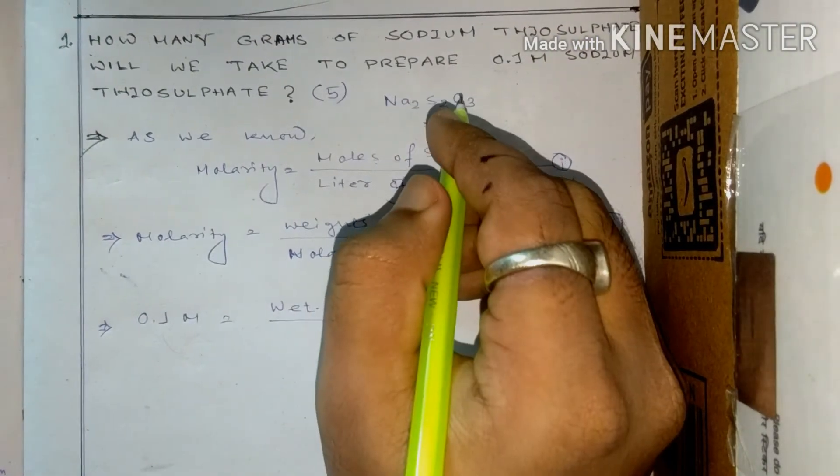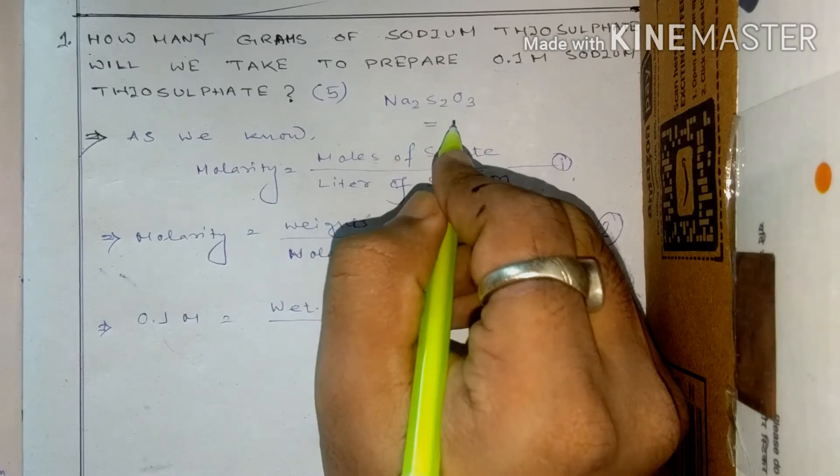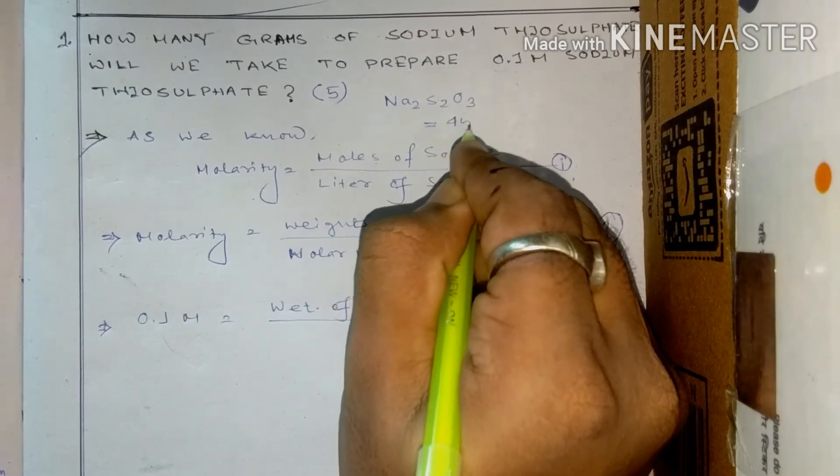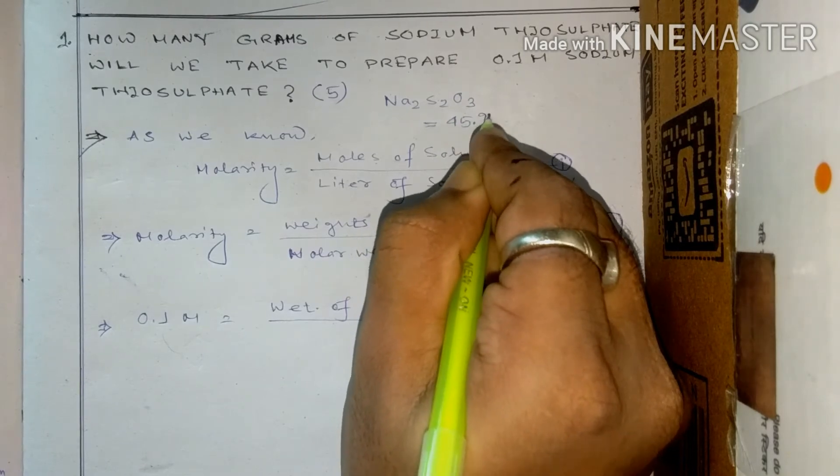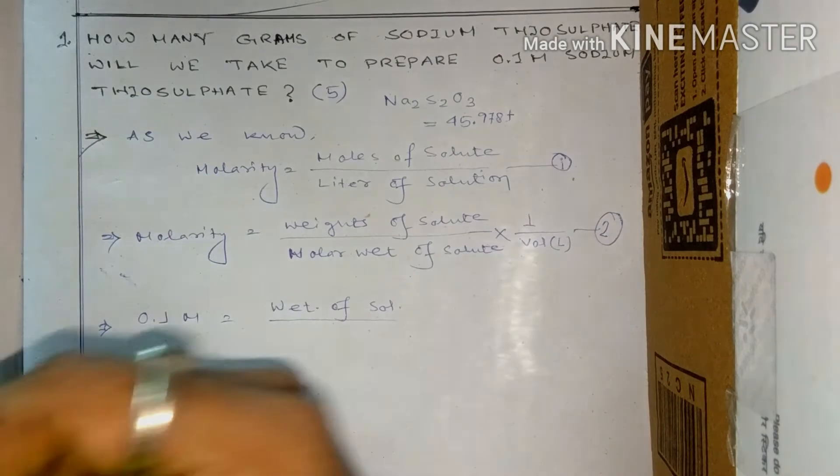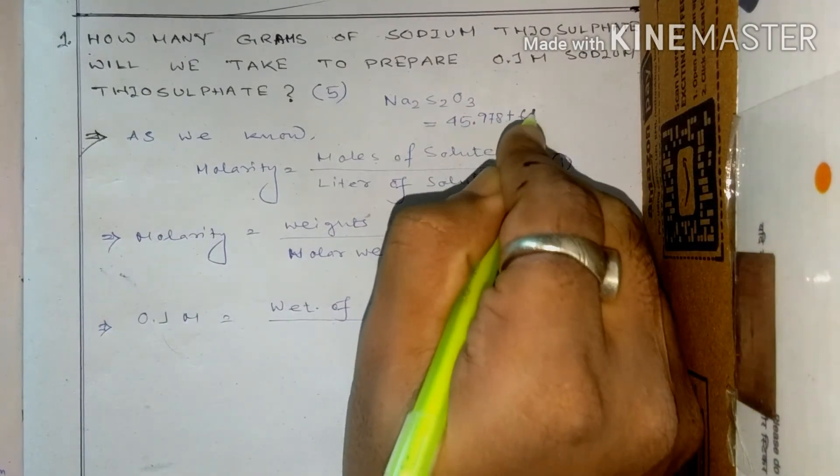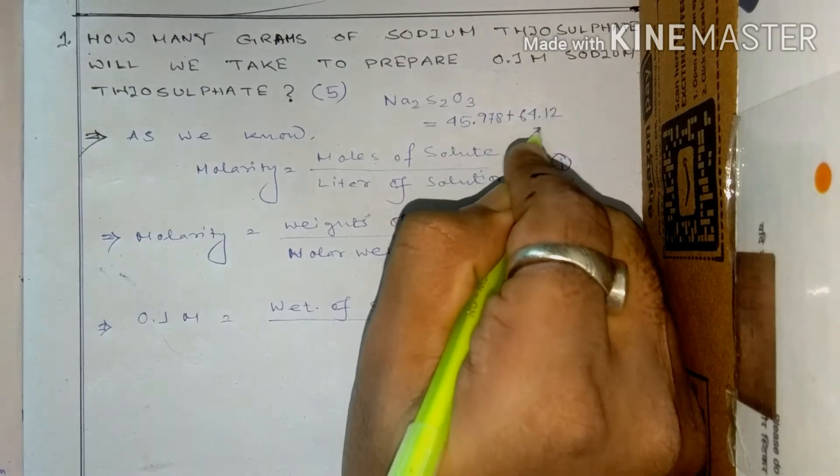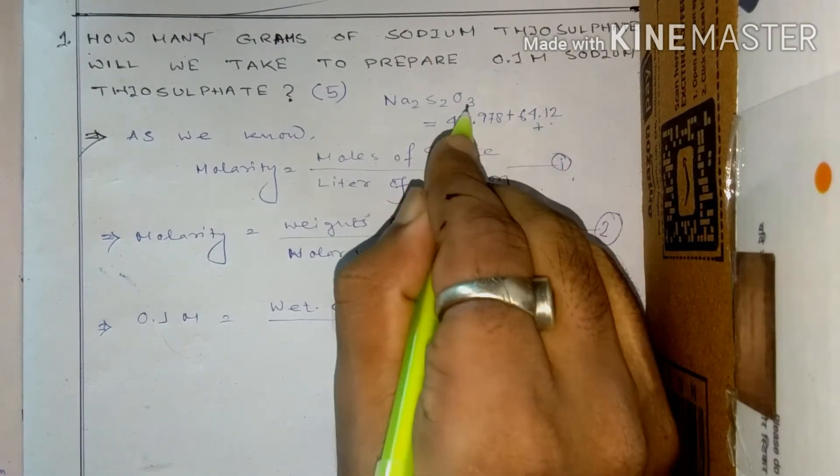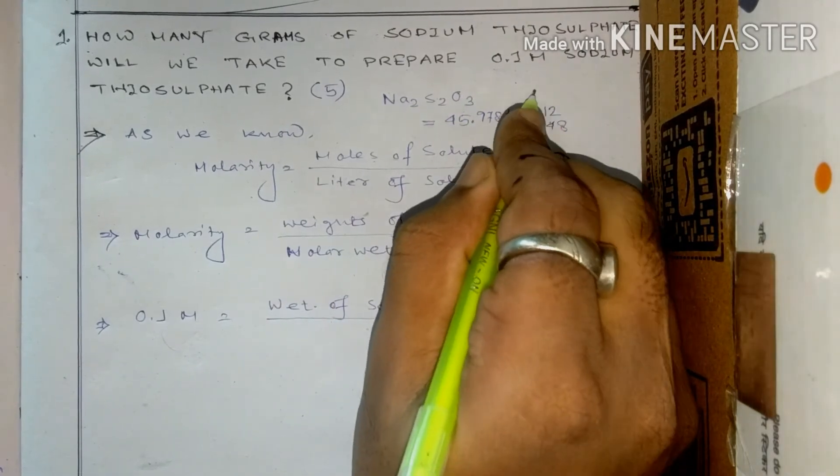If we calculate it, Na, its molecular weight is 22.989, so that means times 2, so it will be 45.978, plus sulfur will be 64.12, plus oxygen will be 16 times 3, that means 48.